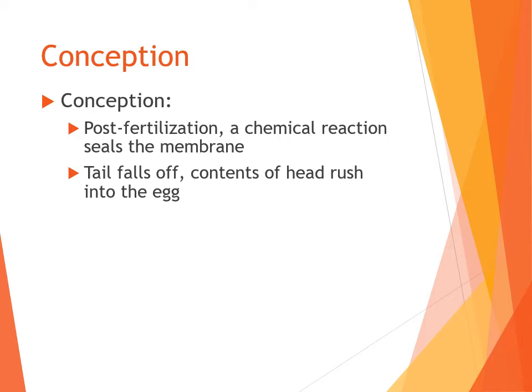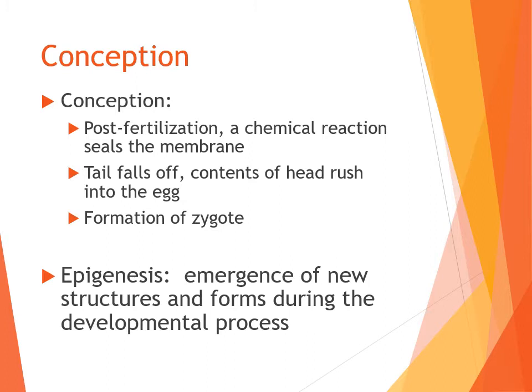After that reaction takes place, the tail falls off the sperm — the little propeller — and all the genetic material contained within the head of the sperm enters the egg. This is what we call a zygote: the very first structure, the fertilized egg, the single-cell egg.